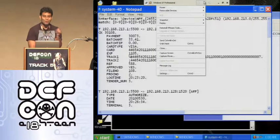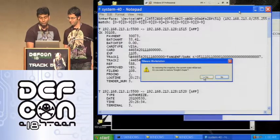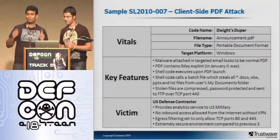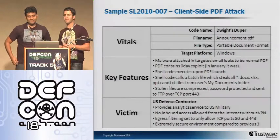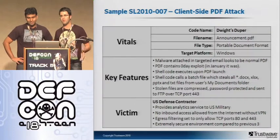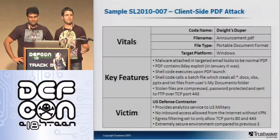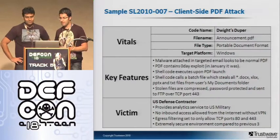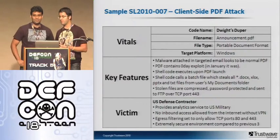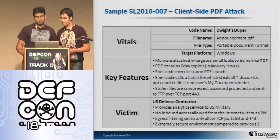The last piece of malware is the most awesome — it's called Dwight's Duper. This is a client-side PDF attack. The difference between this environment and the previous three: this is a U.S. defense contractor with a very high level of security. Nothing was allowed inbound; only port 80 and 443 outbound with email access. Employees received an email with an attachment, and everything went from there. We couldn't use actual defense contractor details, so we chose a different company for the demonstration.